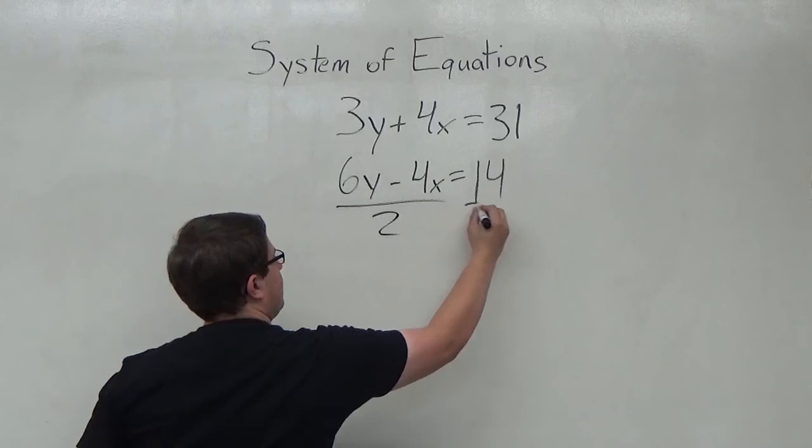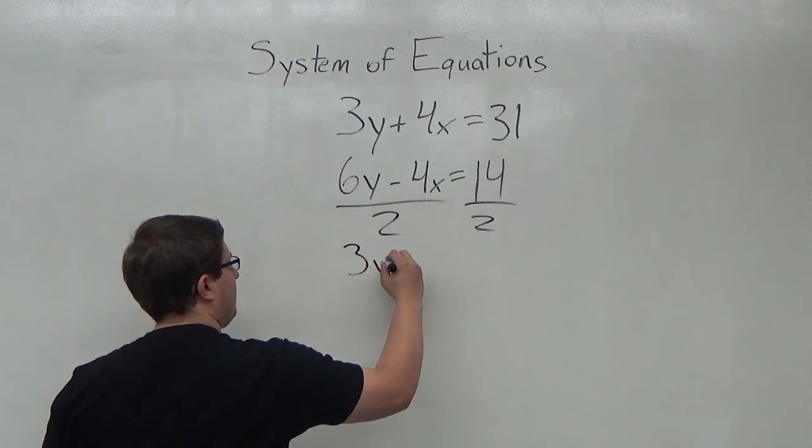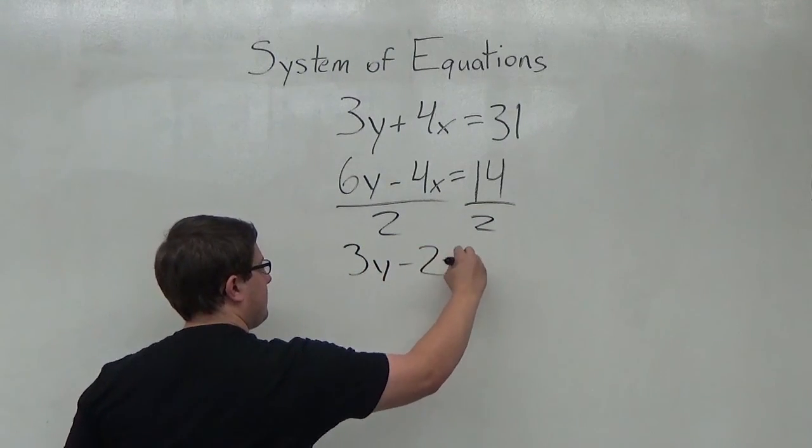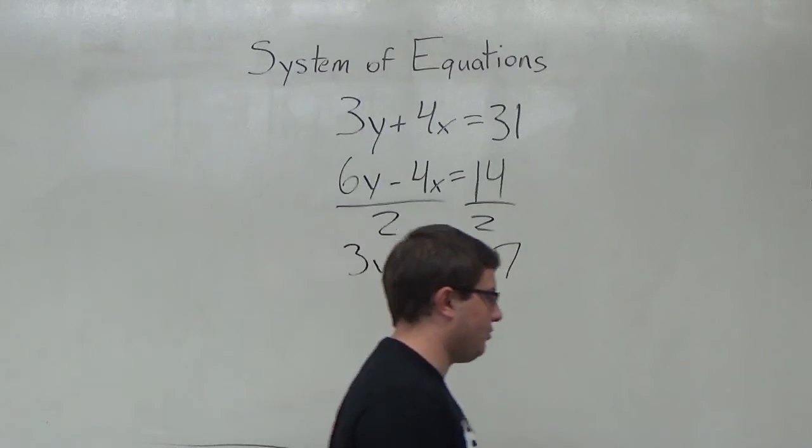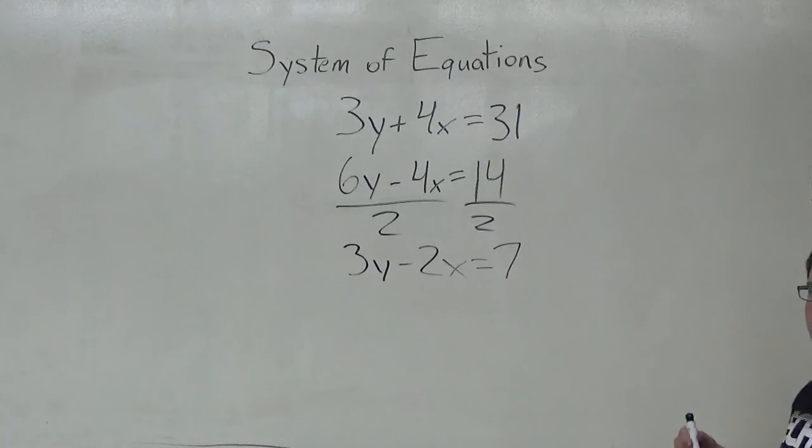So I'm going to divide each side by 2 to get 3y minus 2x is equal to 7. And I'm just going to kind of rewrite these equations over here on the board and I'm going to go through and subtract.